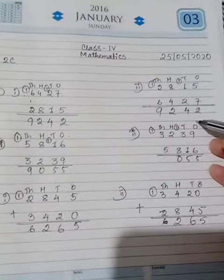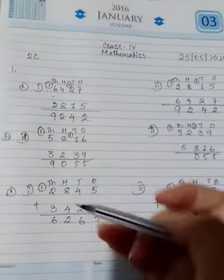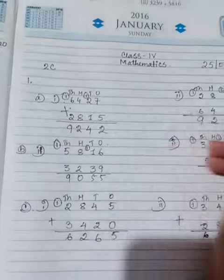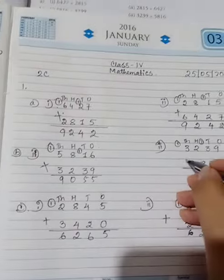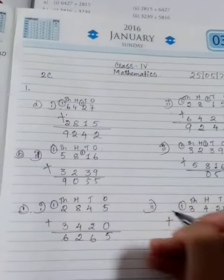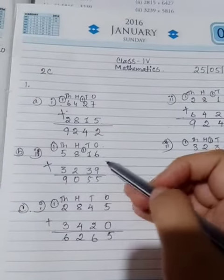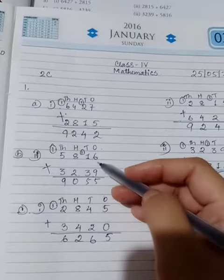See here also same answer. Next one, 5, 8, 1, 6, plus 3, 2, 3, 9. 6 plus 9,